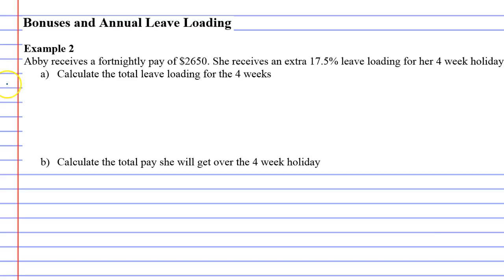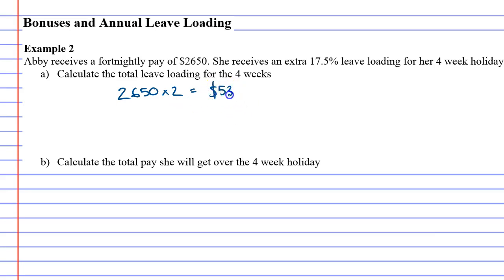So first of all we know that she gets $2650 per fortnight. We want to know how much she gets for four weeks, so we'll times that by two. 2650 times two is $5300. Over the four weeks she would have got $5300 in pay.